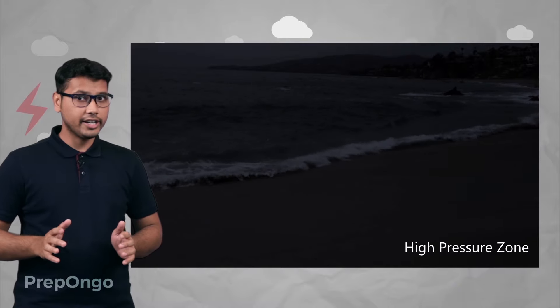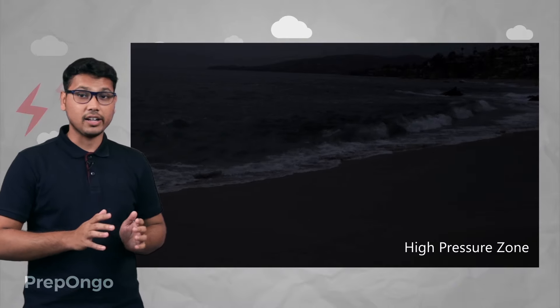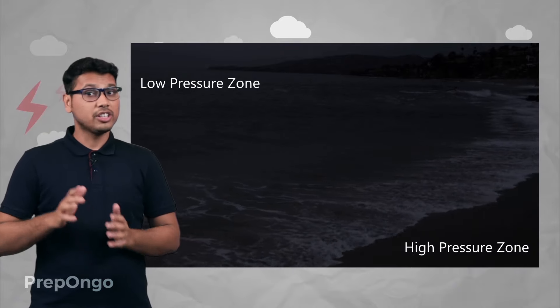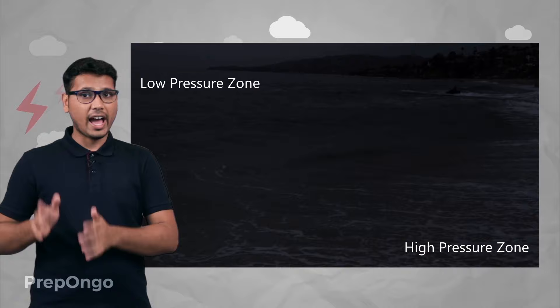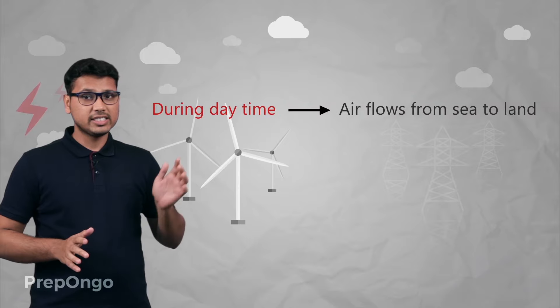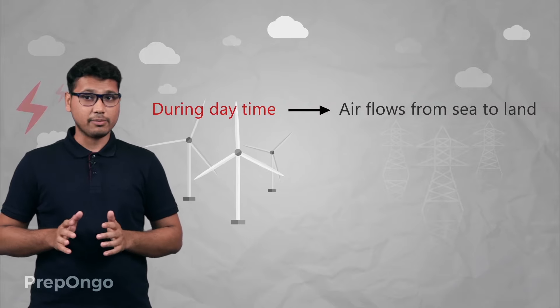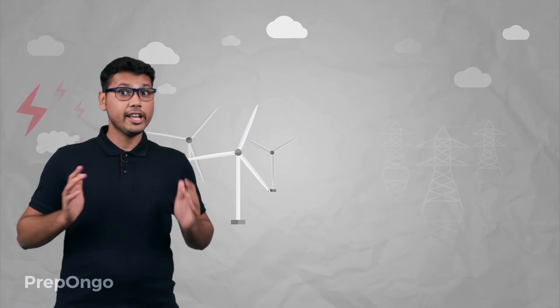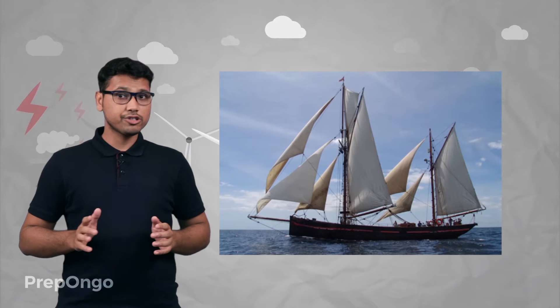But in the night time, the land cools at a much faster rate than the sea. So a high pressure zone will be created on the land and a low pressure zone on the sea. The movement of airflow will then be from land to the sea. So we can say that airflow is from sea to land during the daytime and from land to the sea during the night time.